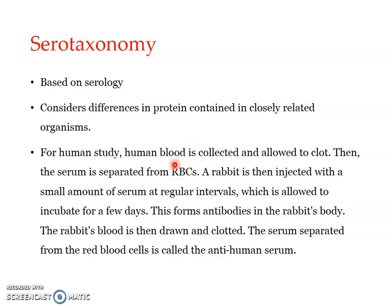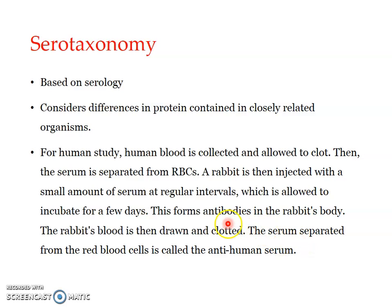So we collected human blood, extracted the serum, and injected it into the rabbit body. Since it is an external component, it acts as an antigen in the rabbit's body, leading to the synthesis of antibodies against the specific antigen. From the rabbit blood we can separate the serum which contains the antibodies against the human serum, and this is known as anti-human serum.